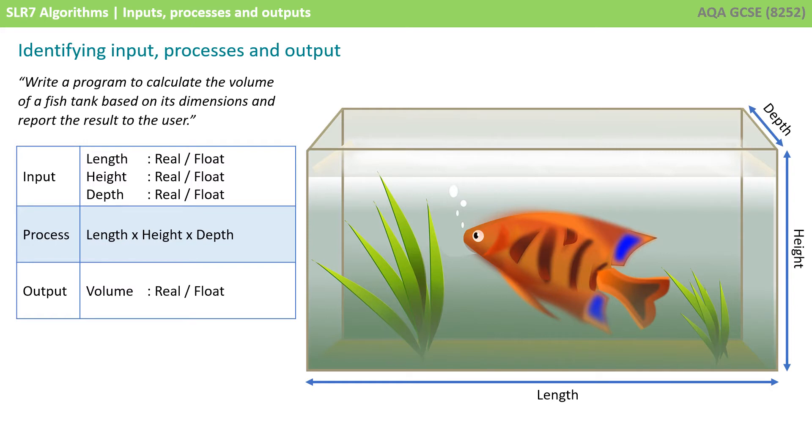Once that data has been input, we then move on to process. So we need to do something with those three variables. To work out the volume, we need to do length times height times depth.